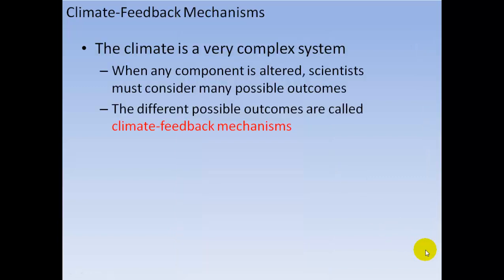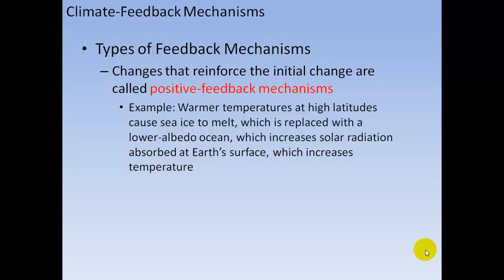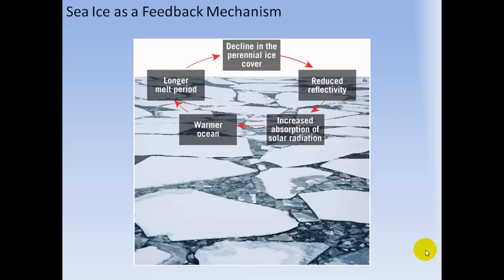The climate system is very complex with many components. Different possible outcomes are called climate feedback mechanisms. Changes that reinforce the initial change are called positive feedback mechanisms — for example, warmer temperatures at high latitudes cause sea ice to melt, which is replaced with a lower-albedo ocean, which increases solar radiation absorbed at Earth's surface, further increasing temperature. This creates reduced reflectivity, increased absorption of solar radiation, a warmer ocean, a longer melt period, and a decline in ice cover that keeps reinforcing itself.